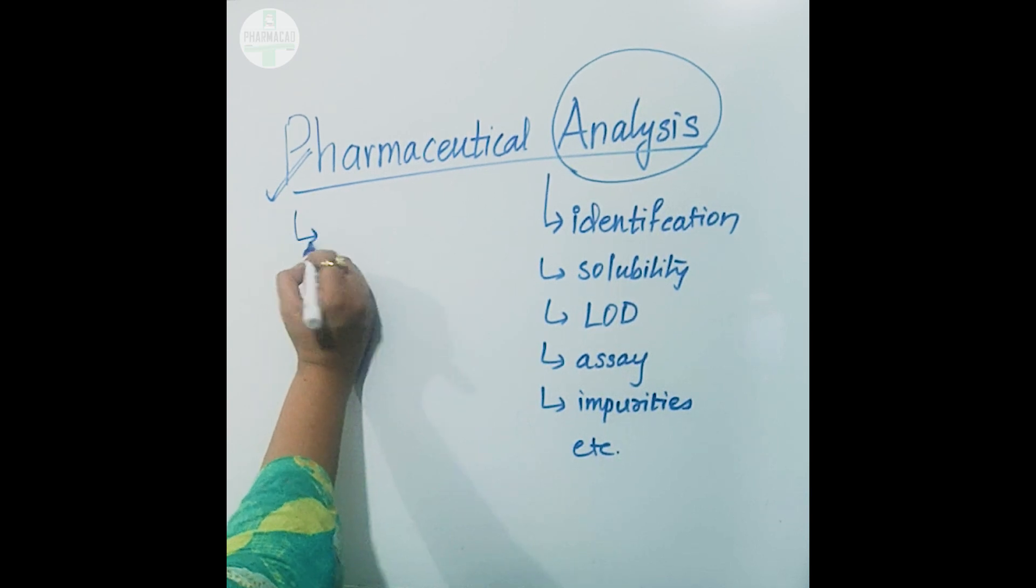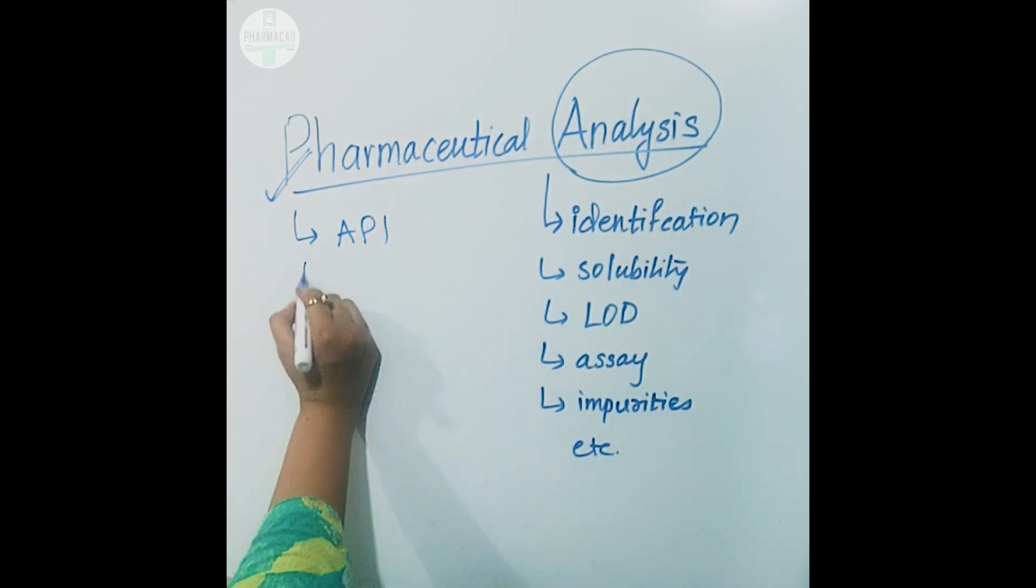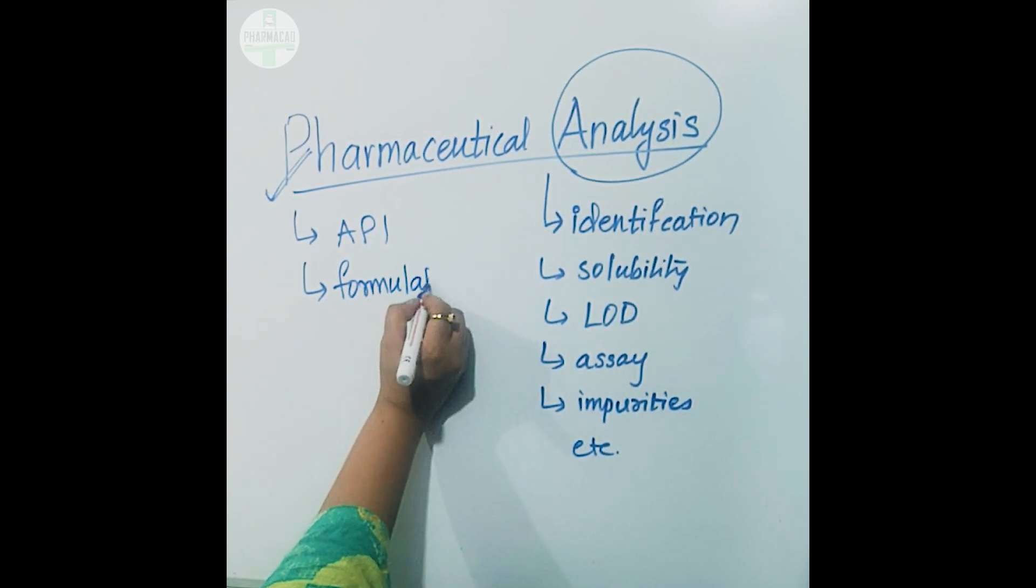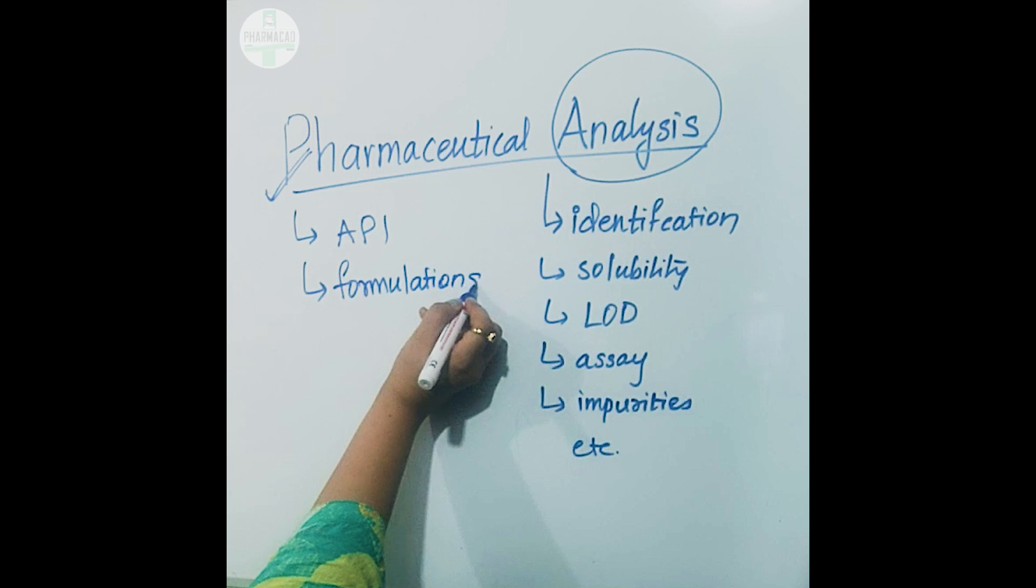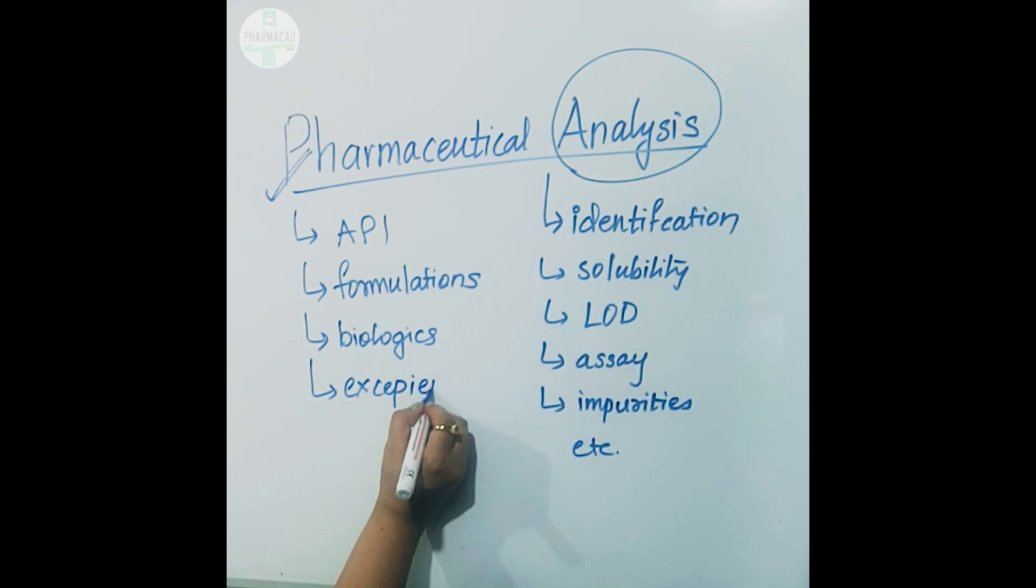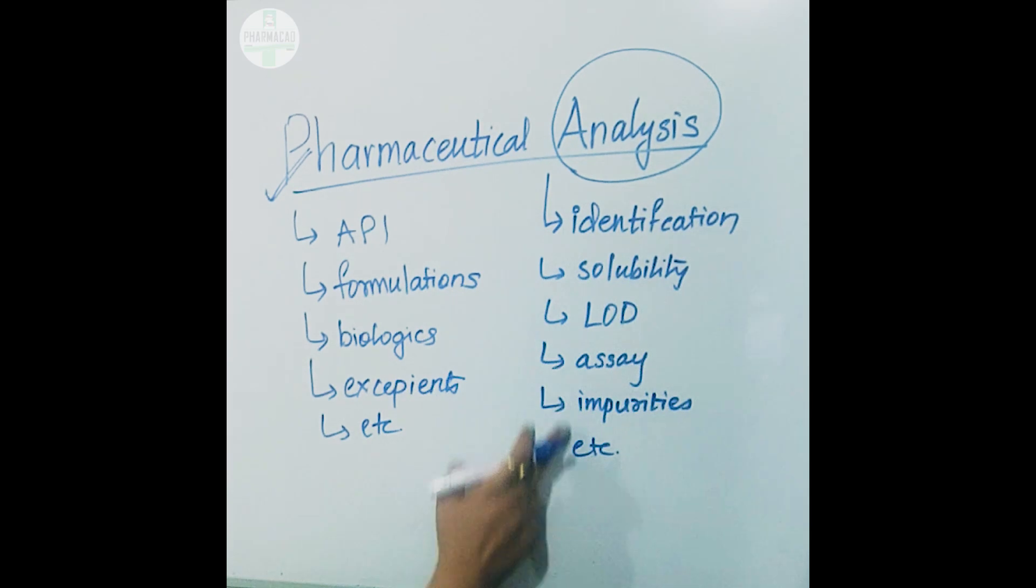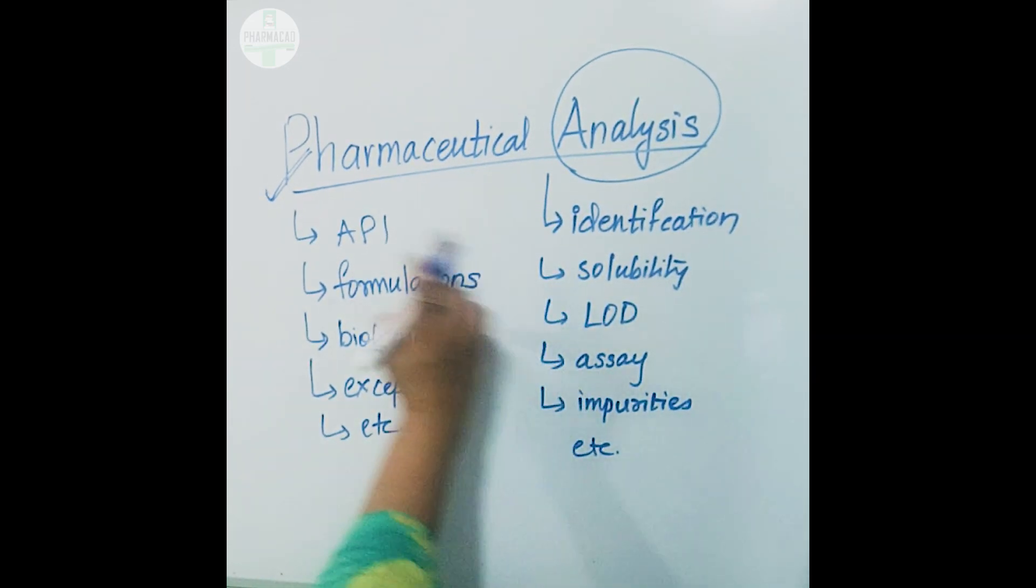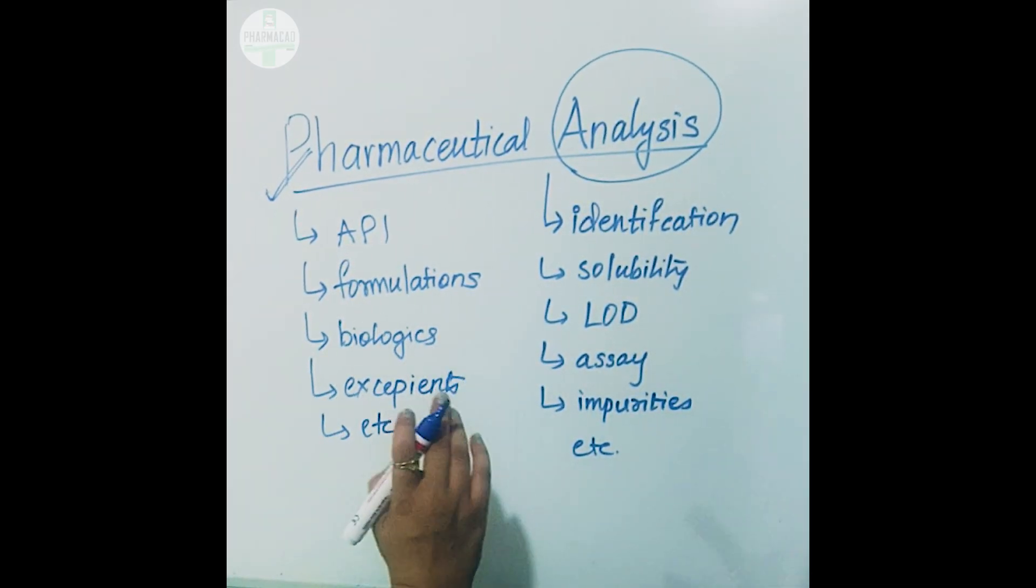Which are these pharmaceuticals? They are things like API, formulations which can be solid oral, liquid oral, parenterals, etc. They can be biologics, they can be excipients, and so on. When you perform such tests, that is analyzing these products is known as pharmaceutical analysis. This gives you a brief idea what pharmaceutical analysis will be.